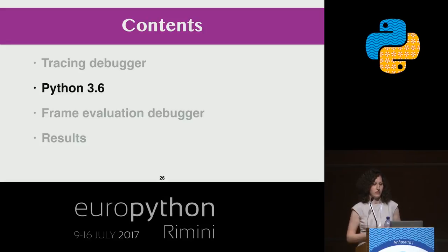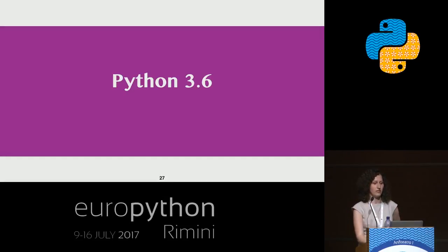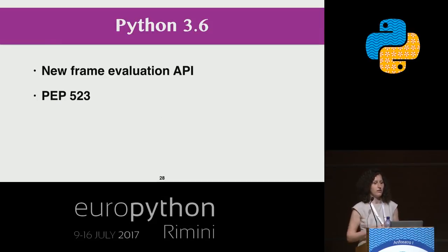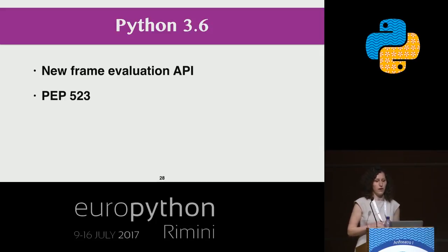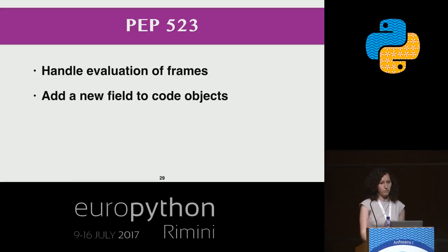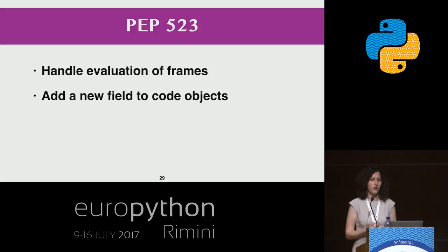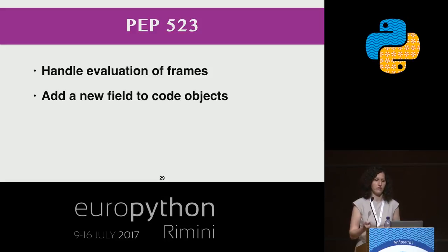Let's consider Python 3.6, released half a year ago. It has many cool features, and one of them is the new frame evaluation API, introduced in PEP 523. PEP 523 allows specifying a per-interpreter function pointer to handle the evaluation of frames. It also adds a new field to the code object — co_extra — to be used by this frame evaluation function.